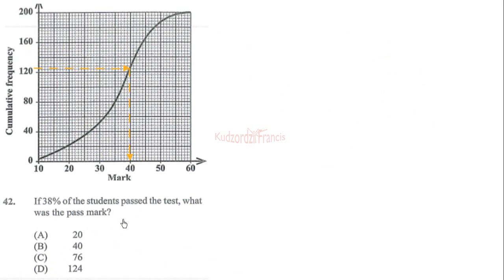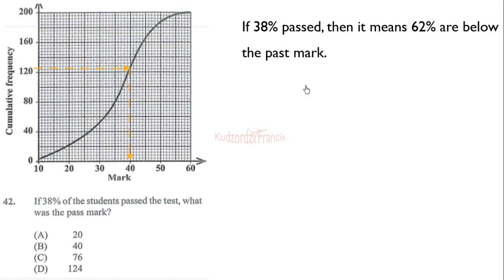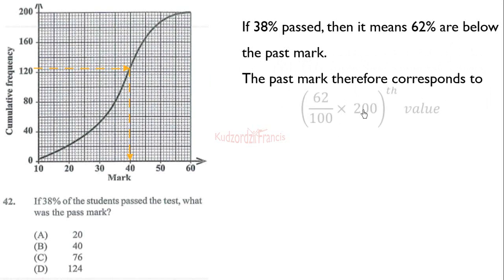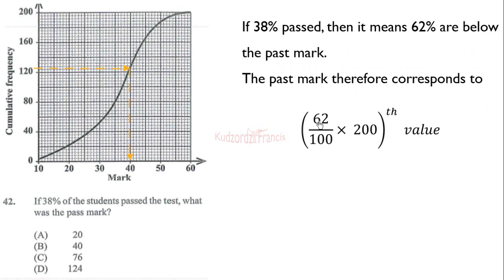Proceeding to question 42: if 38 percent of the students pass the test, what was the pass mark? Since 38 percent pass, it means 62 percent are below the pass mark. So we trace 62 percent on the cumulative frequency graph, and we need to calculate 62 percent of 200.